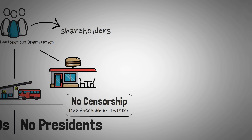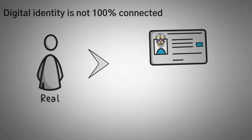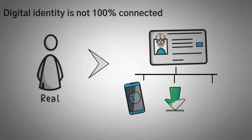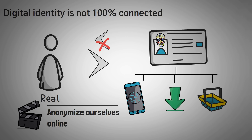Lastly, one of the biggest things in Web 3.0 is that your digital identity is not 100% connected to your real-world identity. This means you can view pages, download things, make purchases, and do any other activity on the internet without being traced to the real you. There are many ways we can anonymize ourselves online — but that might be a future video idea.